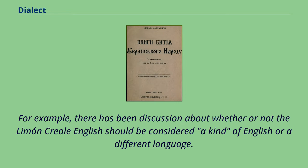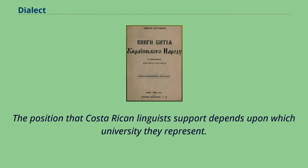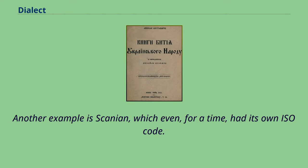For example, there has been discussion about whether the Limon Creole English should be considered a kind of English or a different language. This creole is spoken on the Caribbean coast of Costa Rica by descendants of Jamaican people, and the position that Costa Rican linguists support depends upon which university they represent. Another example is Scanion, which even for a time had its own ISO code.